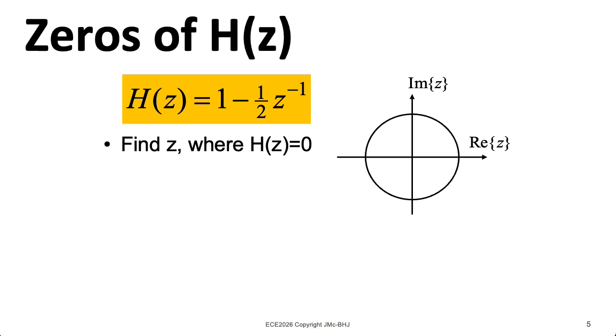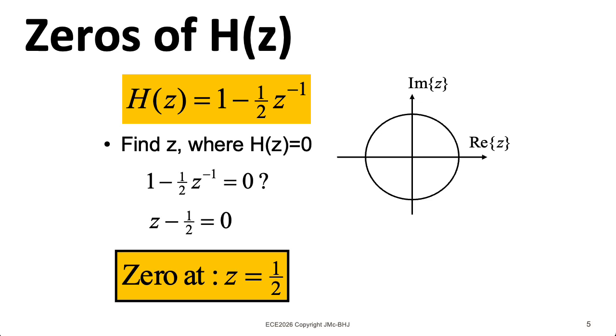We will often characterize system functions according to the locations of their poles and zeros. The zeros of a system function are the location Z on the complex plane where the system function is zero. So in this example, we might set 1 minus 1 half Z to the minus 1 equal to zero. I could multiply both sides here by Z and find that there's a zero at 1 half. We'll typically plot the zeros using these little circles.